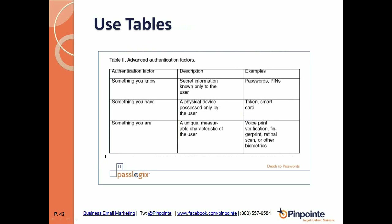Tables can show a body of related data. In the 'Death of Passwords' white paper, a table explains various forms of user identification beyond passwords — including PIN numbers, tokens, smart cards, voice ID, fingerprint ID, and retinal scans. It organizes these by authentication factor type: something you know (like a password), something you have (like a smart card), and something you are (like your fingerprint).